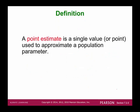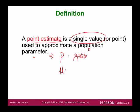The point estimate is a single value — a single numerical value used to approximate a population parameter. The population parameters we're focused on are the population proportion P and the population mean mu. Those two are the major focus.